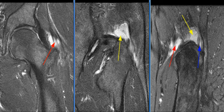MR findings are consistent with complete avulsion of the gluteus minimus tendon and partial tear of the gluteus medius tendon, along with subgluteus medius bursitis.